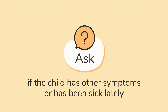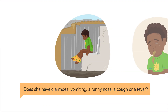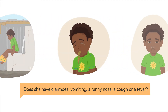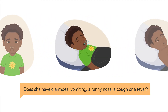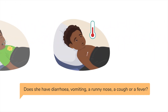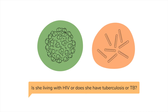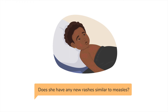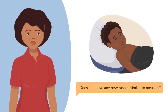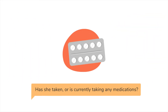Lastly, number five: find out if the child has other symptoms or has been sick lately. You can ask: does she have diarrhea, vomiting, a runny nose, a cough or a fever? Is she living with HIV or does she have tuberculosis or TB? Does she have any new rashes similar to measles? An illness may prevent the body from using nutrients and can also cause the body to need more energy or calories. Has she taken or is currently taking any medications? Certain medications can affect a child's appetite or nutrient absorption.